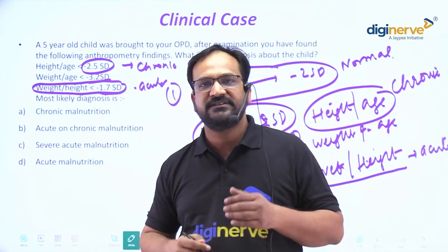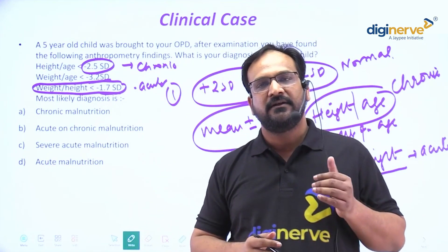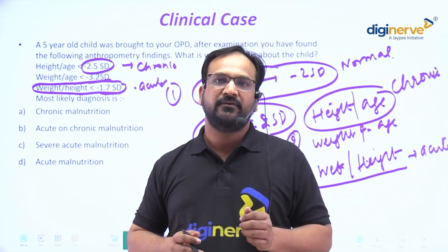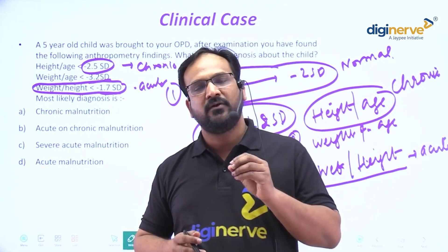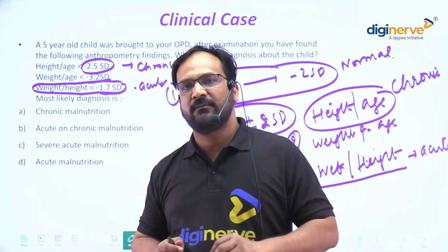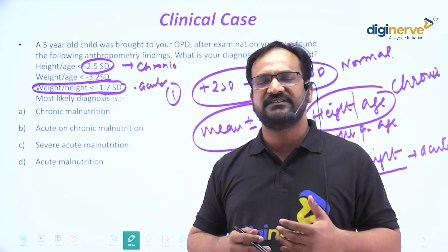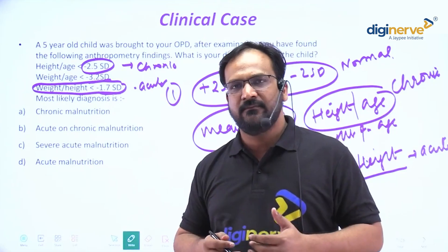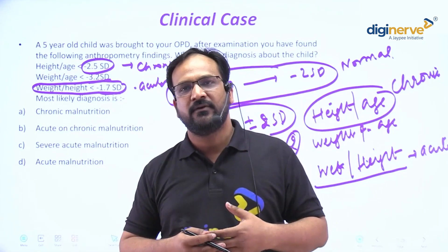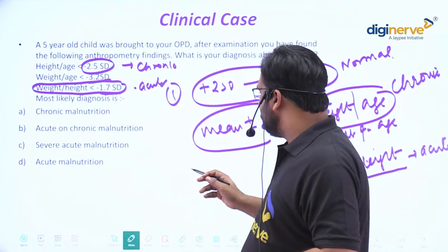Weight-for-age means what is the weight on the age, so it is a general criteria of malnutrition. With weight-for-age you cannot predict whether it is acute or chronic, because sometimes a person is conventionally or genetically having low weight-for-age. So it is a general criteria.